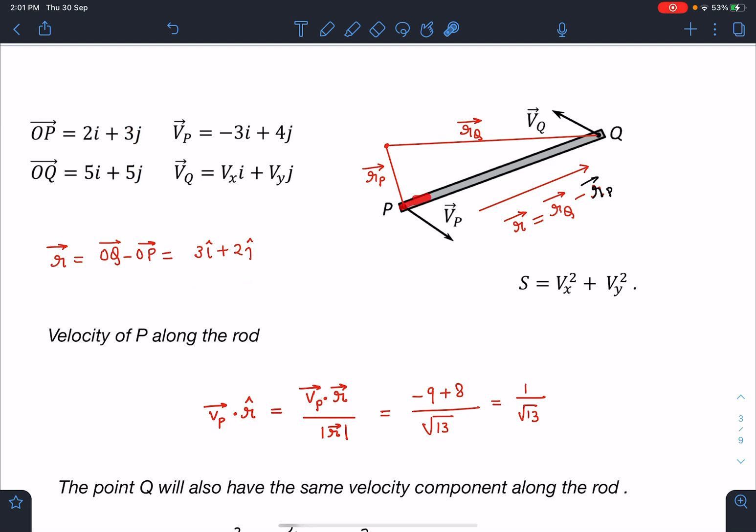Now I know this velocity component Vp for all the points along the length of the rod must be same. So this is Vp dot R cap, component of Vp in this direction, and it is a mod value I have to take. So this is going to be mod of Vp dot R cap. So I forgot to write this mod sign. When you simplify this you are going to get 1 by root 13.